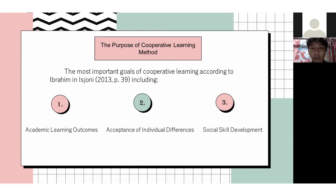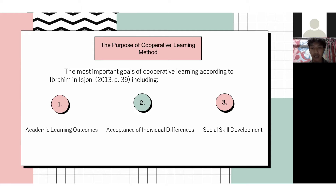The second purpose is acceptance of individual differences. Cooperative learning provides opportunities for students from various backgrounds to depend on each other for academic tasks, and through the reward structure of cooperative learning, they will learn to respect each other.